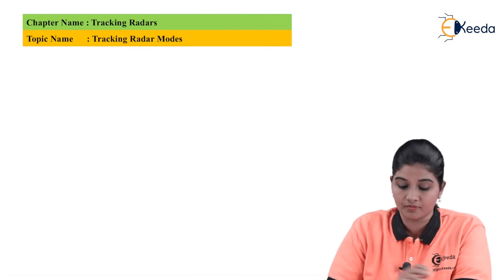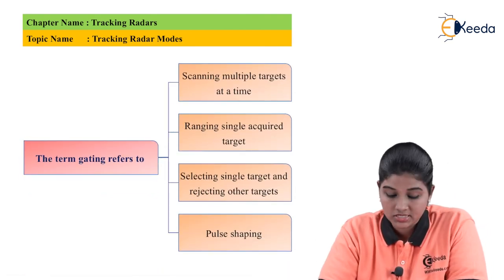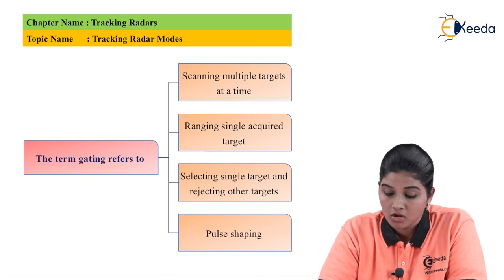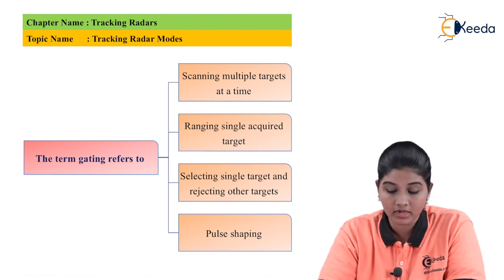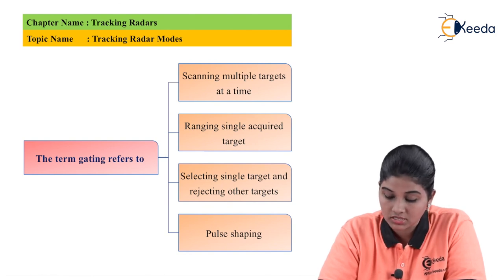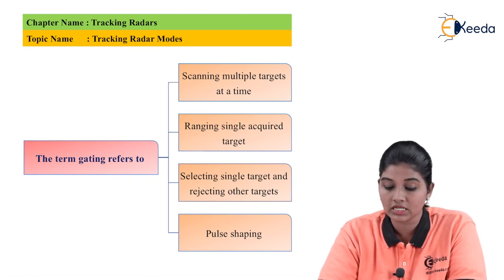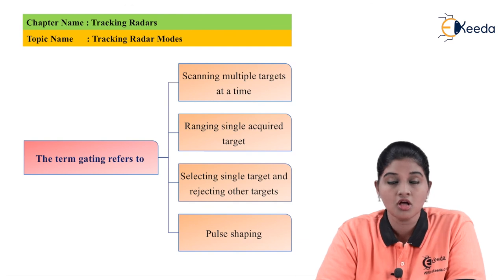The next question: the term gating refers to — option A: scanning multiple targets at a time; option B: ranging signal acquired target; option C: selecting single target and rejecting other targets; option D: pulse shaping. The correct answer is option C — selecting a single target and rejecting other targets.